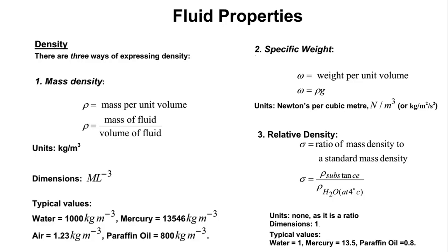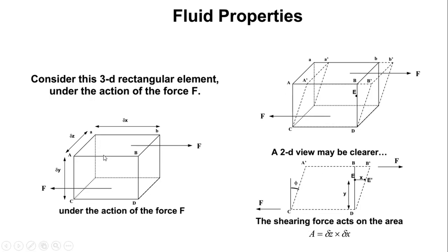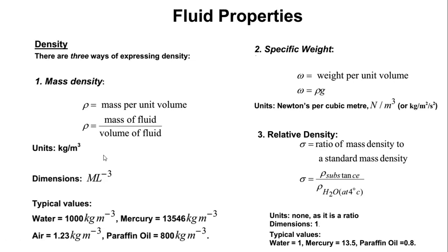The next thing is specific volume. Specific volume is defined as volume of the fluid over mass of the fluid. Specific volume is the inverse of density — which means specific volume is equal to 1/ρ, or rho to the power minus one.